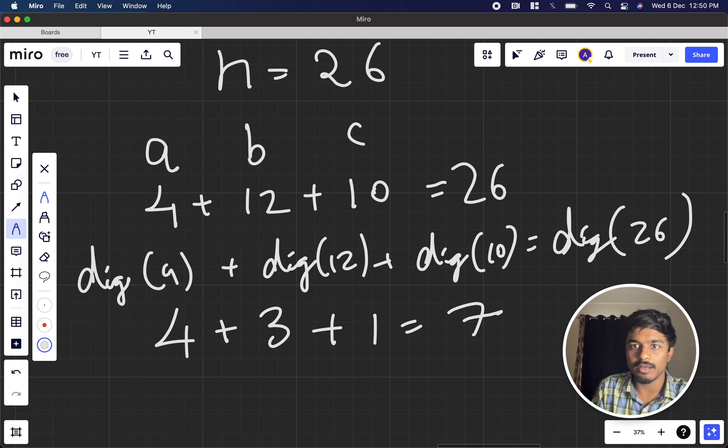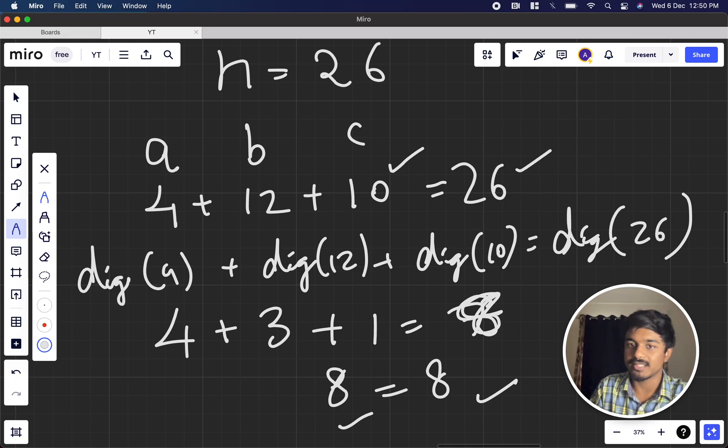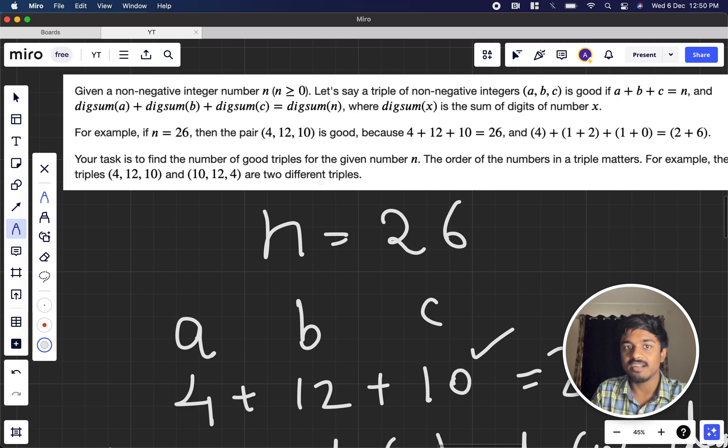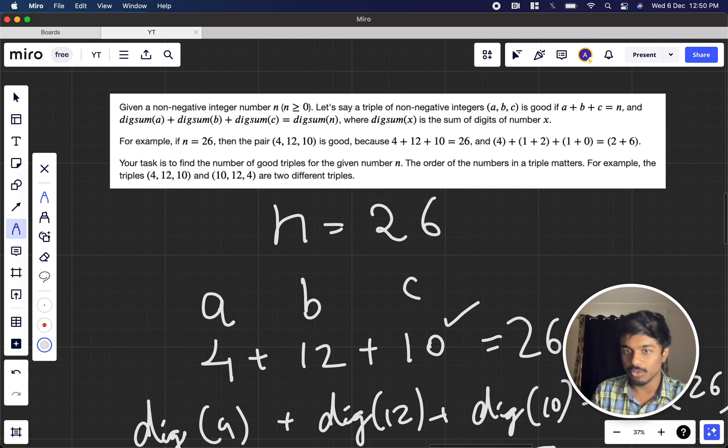So 4 plus 3 plus 1 equals 8, and 2 plus 6 is 8. So 8 equals 8. LHS equals RHS here, and LHS equals RHS there as well. Now they ask: your task is to find the number of good triples for the given n. If you're adding three numbers and reducing to digit sum, and the answer remains the same LHS equals RHS, then it's a good triple.